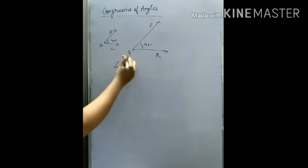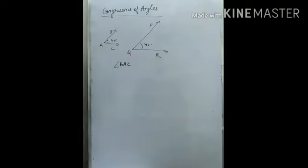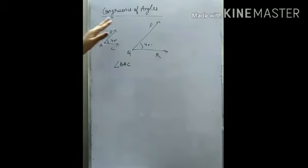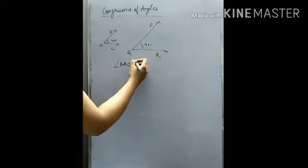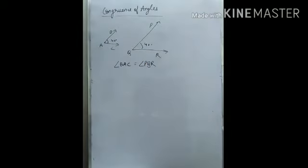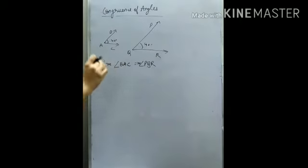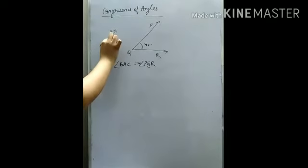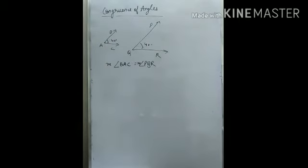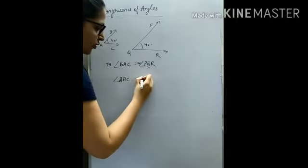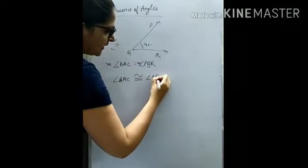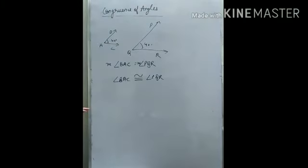This angle is angle BAC. Remember the vertex is in the center where the angle is formed. And the other angle is angle PQR. So angle BAC is congruent to angle PQR, and the measure is the same. We are comparing the angles here — the angle is 40 degrees. Since the measure of both angles is the same, we say the angles are congruent.